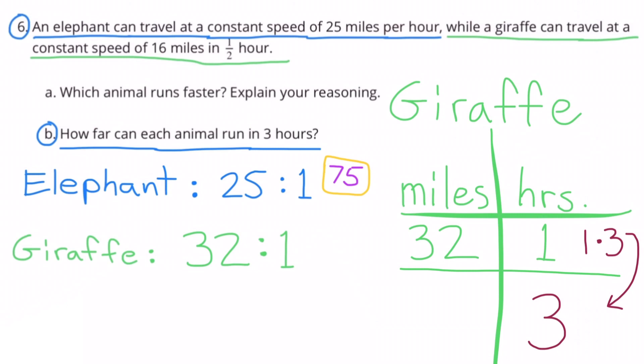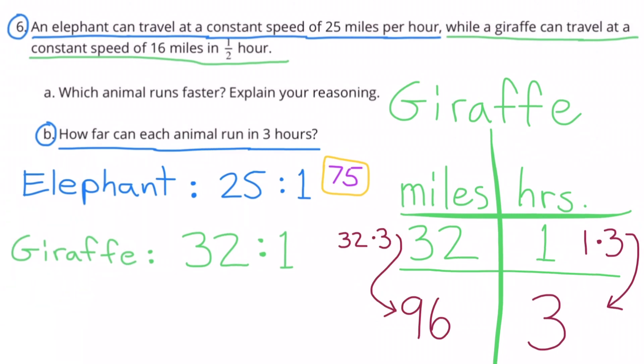I need to multiply one hour times three. Since I multiply the hours by three, I also need to multiply the miles times three. Thirty-two times three equals ninety-six. In three hours, the giraffe could travel ninety-six miles.